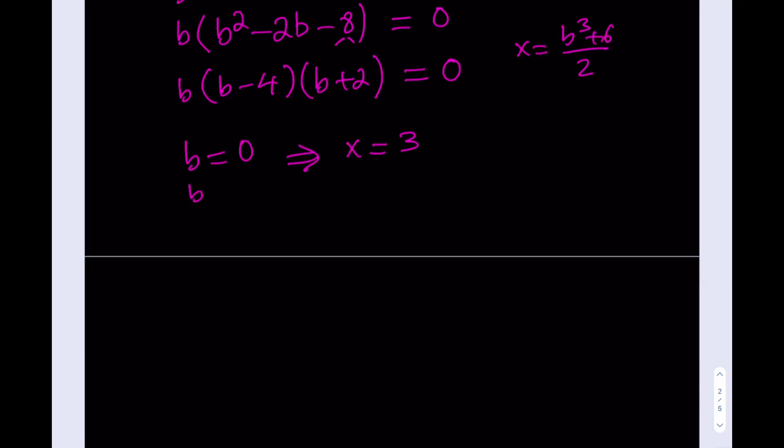And then, if B is equal to 4, then x is equal to what? Let's see. 4 cubed is 64 plus 6 is 70 divided by 2 is 35. That's kind of unexpected. Like, what? 35? Where does that come from? Okay, well, it comes from the equation. What can I do?